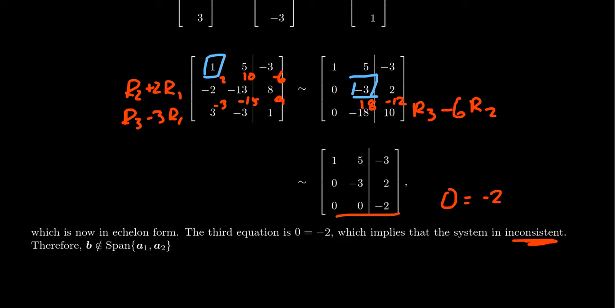If this linear system is inconsistent, that means that b is not inside the span. Consistency means you're in the span. You are a linear combination. Inconsistency means you're not in the span. You're not a linear combination. And that's all there is to determining whether a vector is a combination of others, whether it's inside the span of others.